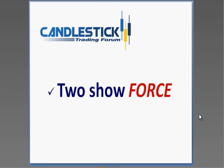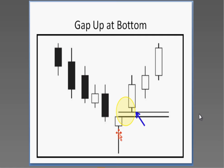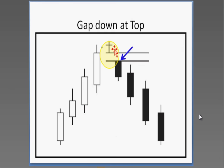Two of these show force. When you see a candlestick reversal signal and then a gap up, that tells you not only was there a change of investor sentiment, but they're really anxious to change it. Or if you see a reversal signal at the top followed by a gap down, that indecision at that point — when they gap it down — tells you there's strength behind that new decision.